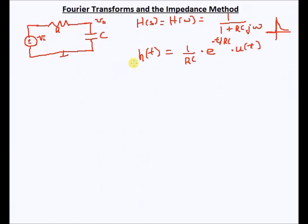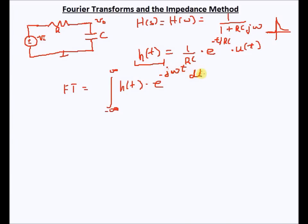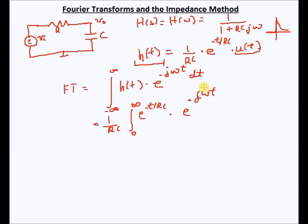Now I will find H(ω), but this time by computing the Fourier transform of h(t). The Fourier transform is defined as the integral from minus infinity to infinity of h(t) times e^(−jωt) dt. The lower limit becomes zero because we have u(t). So I get (1/RC) times the integral from zero to infinity of e^(−t/RC) times e^(−jωt) dt.